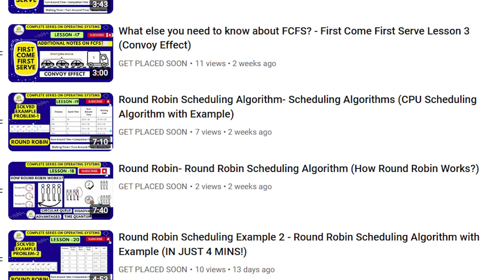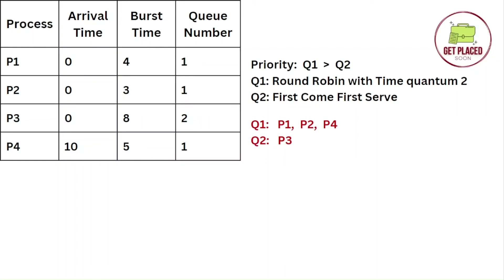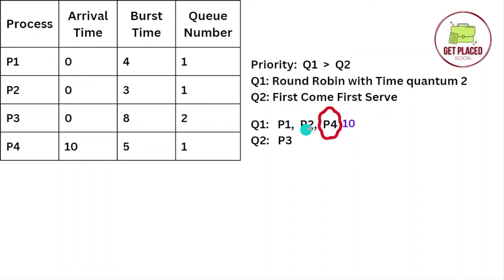I am noting down all the processes. Q1 consists of P1, P2, and P4, and Q2 consists of P3. The arrival time of the first three processes is 0, so P1, P2, and P3 are available from time 0. But P4 will only arrive at time unit 10.